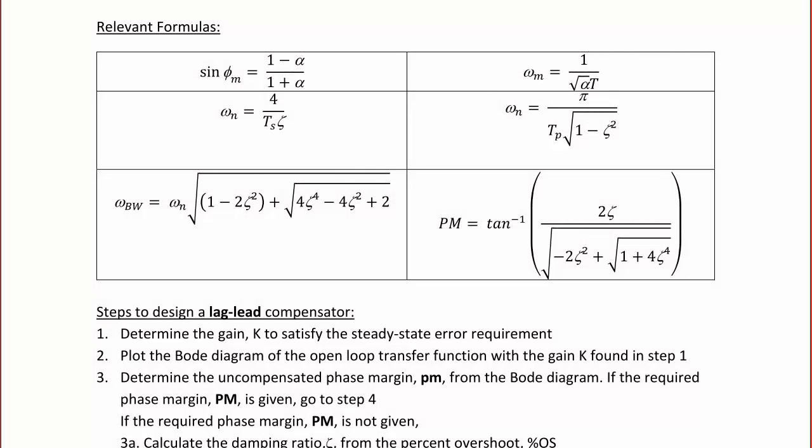Several formulas are used for this design. The sine of phi sub m equals (1 minus alpha) over (1 plus alpha). Omega sub m equals 1 over the square root of alpha times T. The natural frequency equals 4 over (Ts times zeta), or pi over (time-to-peak times square root of 1 minus zeta squared). The bandwidth equals the natural frequency times the square root of (1 minus 2*zeta squared plus the square root of 4*zeta^4 minus 4*zeta squared plus 2). The phase margin equals the arctangent of 2*zeta over the square root of negative 2*zeta squared plus the square root of 1 plus 4*zeta to the fourth.